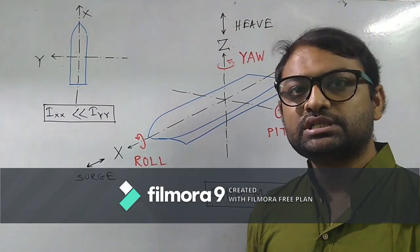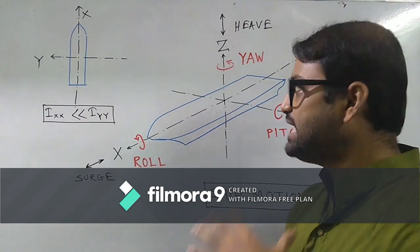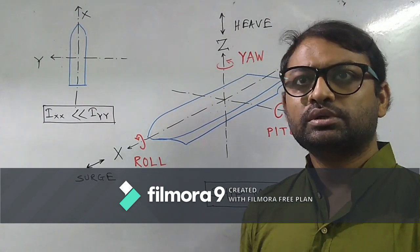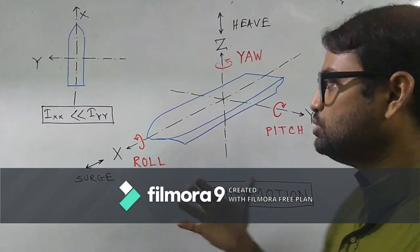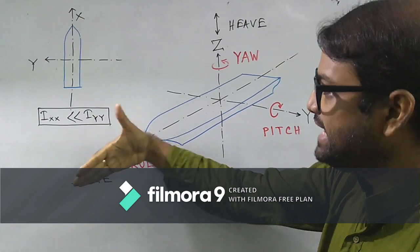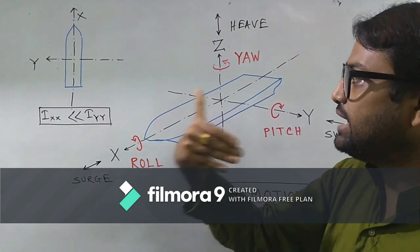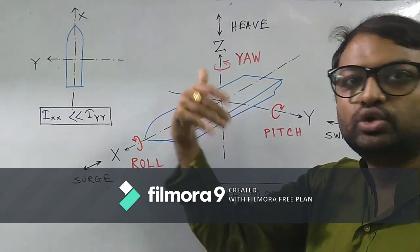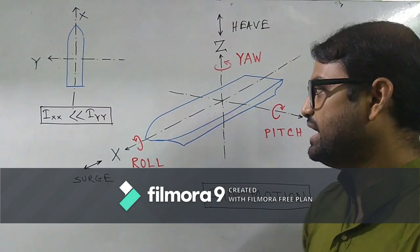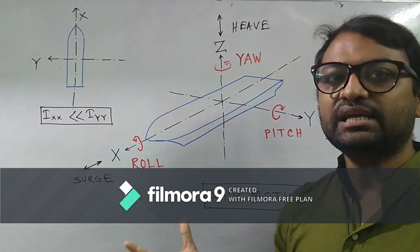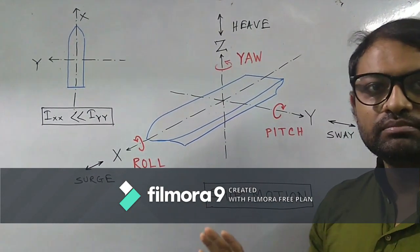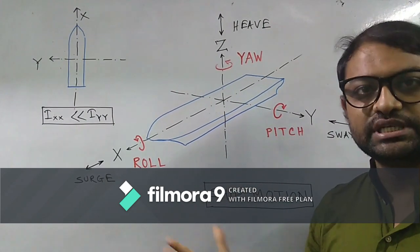Before going into the motions, I want to discuss the axis system. Whatever axis system we may consider, we have to make sure that if we use our right hand and turn it from x to y axis, the right hand thumb should direct towards our z axis. This is a standard notation of axis system and I am following the same. It can vary but the rule should be constant. Now we have six degrees of freedom, three translational and three rotational.